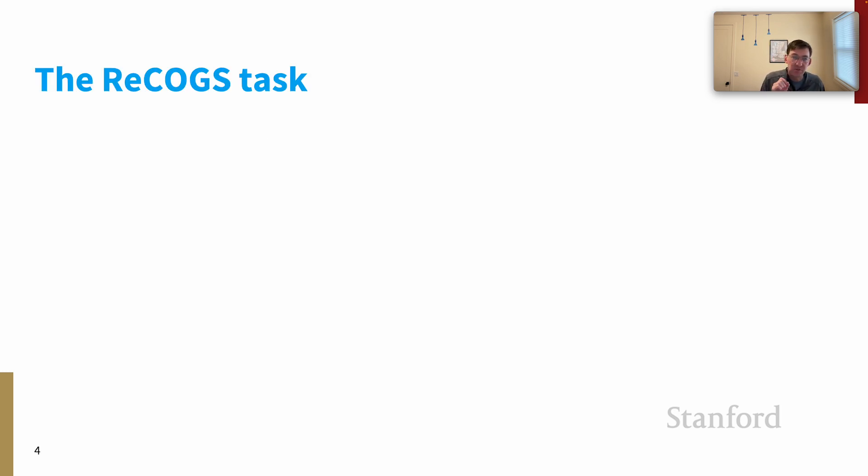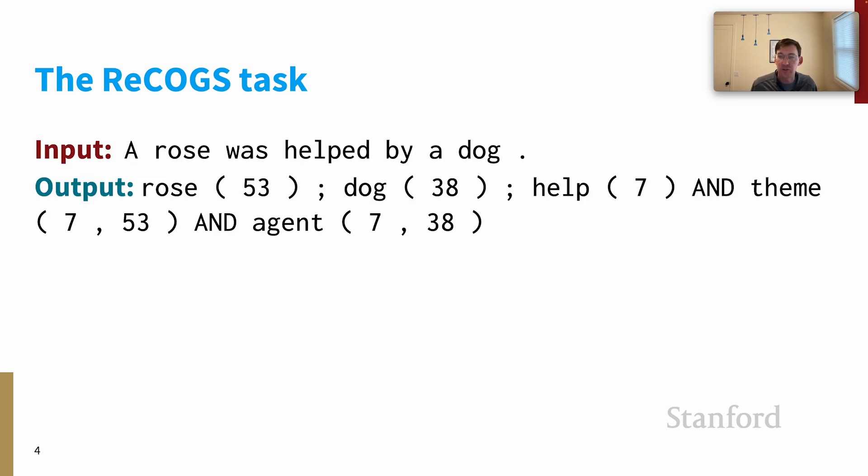The ReCOGS task is fundamentally a semantic parsing task. The inputs are simple sentences and the outputs are logical forms like this. So here in this example the input is 'a rose was helped by a dog' and you can see that the output is a sort of event description as a logical form.